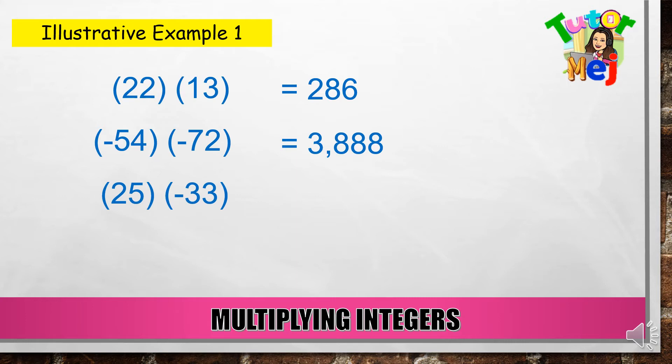Positive 25 times negative 33. This time, isa ang positive, isa ang negative. So take note — positive times negative equals negative. Then multiply 25 and 33, so we have negative 825.